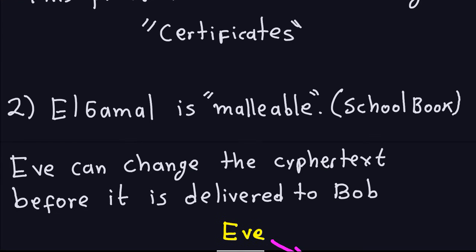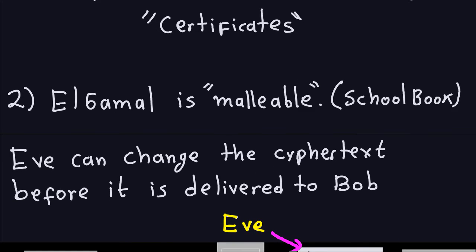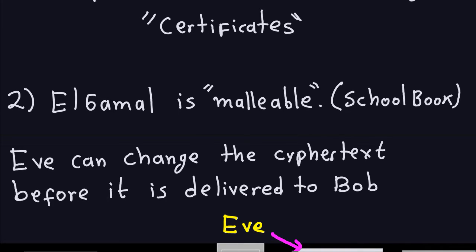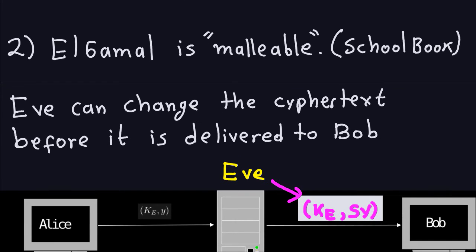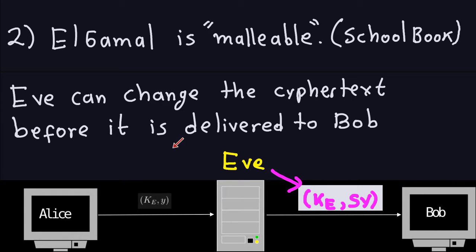Now the ElGamal, if you recall what we did with the RSA. The RSA is also malleable. It means that Eve could change the ciphertext in a way that when it arrives to Bob, Bob won't realize that the plaintext has been changed also. But this happens only for the schoolbook ElGamal. If you recall the RSA, the schoolbook RSA is not actually what is used. In reality you have to use some kind of padding to get rid of this problem. But for the schoolbook, which is the one we just saw, that's the problem here. Eve can change the ciphertext before it's delivered to Bob.